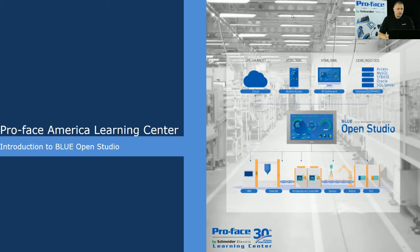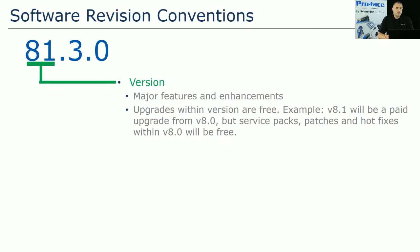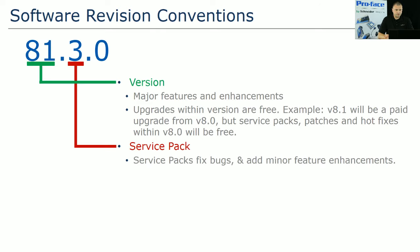We'll begin by discussing the overall licensing for the software. The current version is 8.1 Service Pack 3. Version 8.1 is a major feature release, and if you currently have 8.0, this will be a paid upgrade. However, anything within this major version — patches, hot fixes, and service packs — will be free. Service packs usually contain bug fixes and minor feature enhancements.